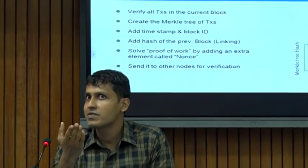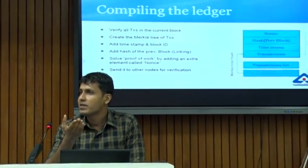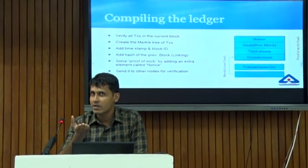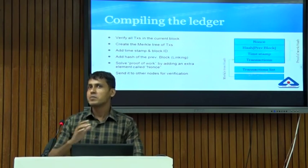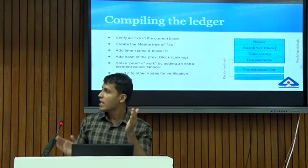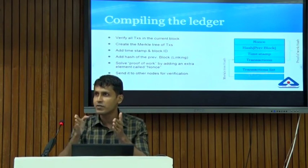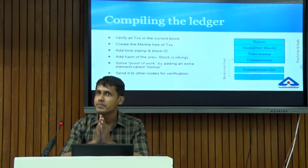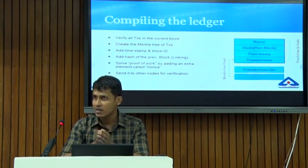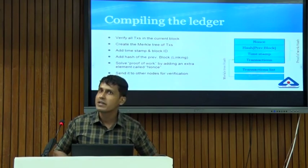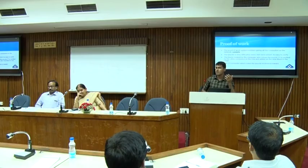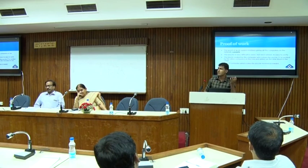Transactions are validated by peers — people or computers in the network. There may be thousands of transactions that happened in the last five or ten minutes, and all of these have to be compressed into a new block. This process is called creating a Merkle tree.